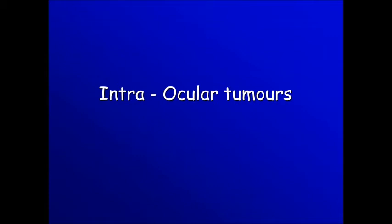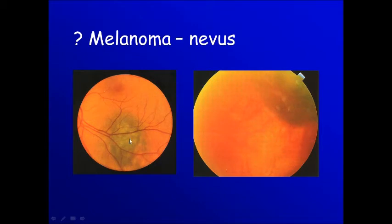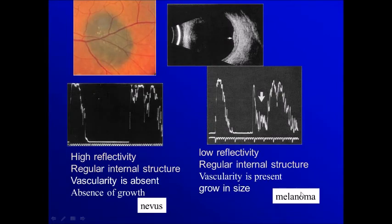Now I want to go to the different intraocular tumors. Here we have a pigmented lesion and we are not sure whether it is a nevus or a melanoma. If it's a nevus, then it's just pigmented cells in a normal choroid, so the reflectivity is high with a regular internal structure. But if it's a mass of cells with no septa in between, then the reflectivity will be low — this is the case of melanoma.